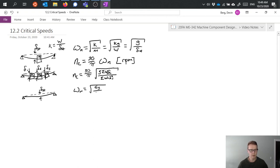Five g over four delta st and of course then we know how already how to convert that to critical speed. But basically this is just giving us a relationship based on the mass of the shaft by itself.